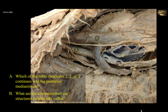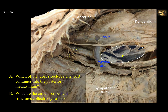Which of the tubal structures — 1, 2, or 3 — continues into the posterior mediastinum? What are the circumscribed cut structures collectively called? This is a view of the mediastinum from the right side. Note the thoracic sympathetic trunk, beaded by ganglia, in the posterior thoracic wall. This is the middle mediastinum containing the pericardium enclosing the heart. Tubal structure 1 is the superior vena cava — you can see that it receives the arch of the azygous vein. The superior vena cava terminates into the right atrium in the middle mediastinum and does not continue into the posterior mediastinum.